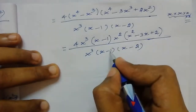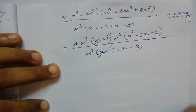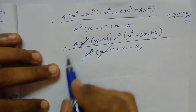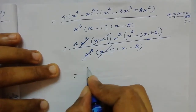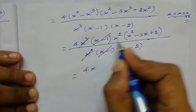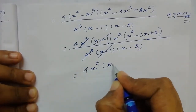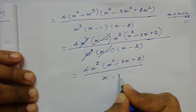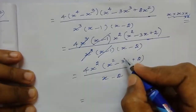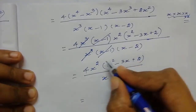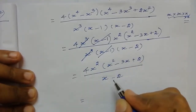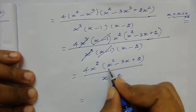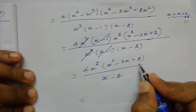Now see the denominator and write x³, (x-1), (x-2). We can cancel the common factor (x-1) with (x-1), and x³ with x³. No other common factors, so we write the remaining terms: 4x² × (x² - 3x + 2) divided by (x-2). The bracket value is a quadratic equation, so we need to factorize it.